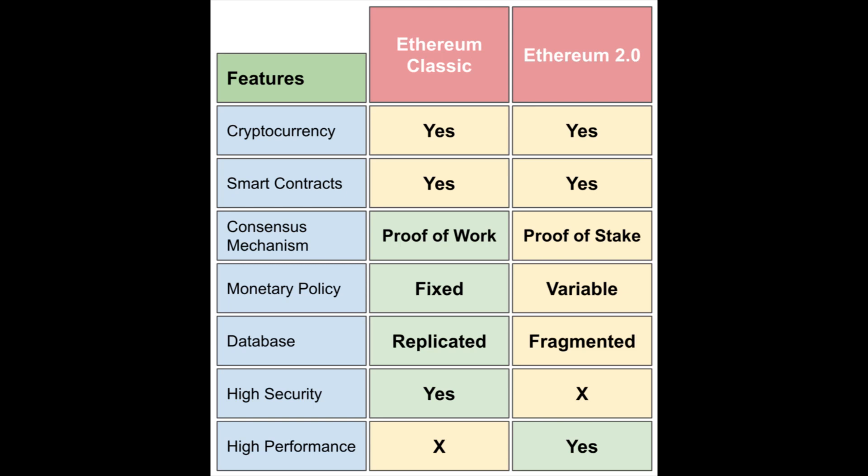Now that we have looked at the technological components, key features, and foundational principles of Ethereum Classic, let's see how it stacks up against Ethereum 2.0. Both platforms are smart contract cryptocurrencies, but that is where their similarities end for the sake of this comparison. Ethereum 2.0 switches from the highly secure proof-of-work consensus mechanism to the highly efficient proof-of-stake mechanism. It also has a variable monetary policy, meaning there can eventually be more total Ethereum tokens to inflate the currency through less scarcity, and it also makes it far less decentralized.